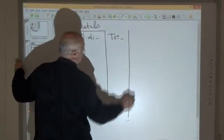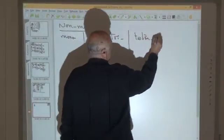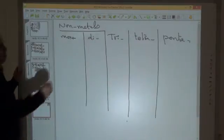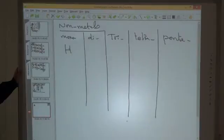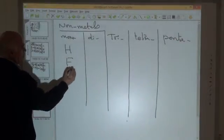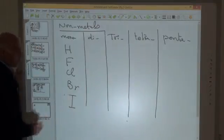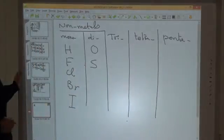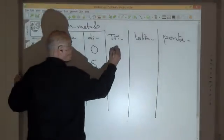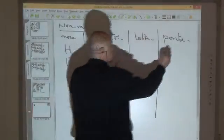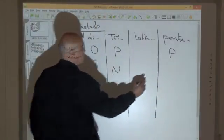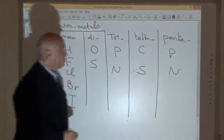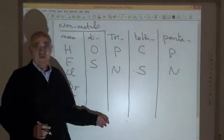In the case of non-metals: monovalent non-metals include hydrogen and the halogens — fluorine, chlorine, bromine, and iodine. Divalent non-metals include oxygen and sulfur. Trivalent non-metals include phosphorus, which may be tri or pentavalent, and nitrogen, also tri or pentavalent. Tetravalent non-metals include carbon and sulfur. These are the examples for the valency of important metals and non-metals.